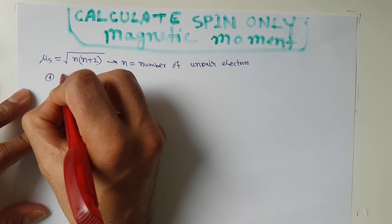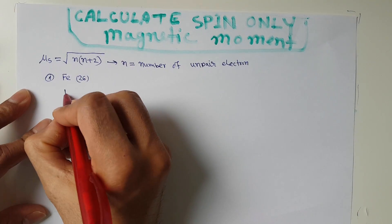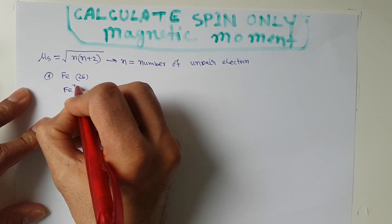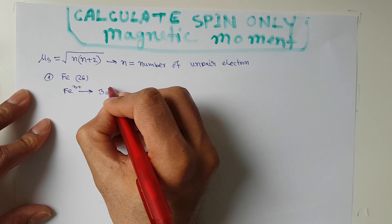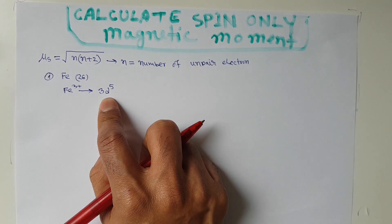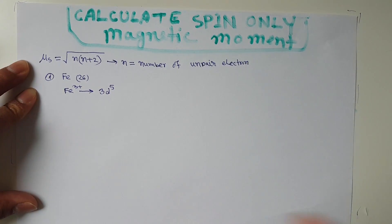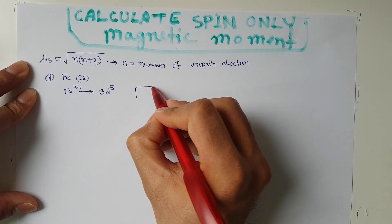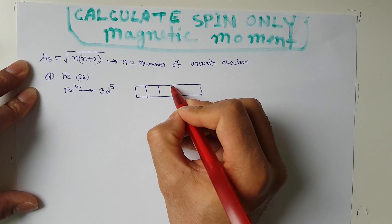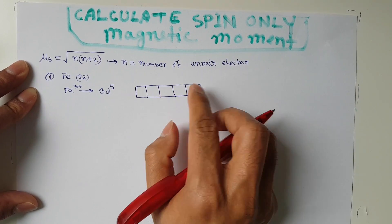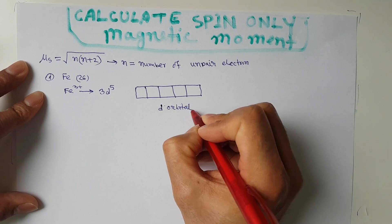For the first example, consider iron. Fe has 26 electrons. Let's consider the Fe³⁺ ion. The Fe³⁺ ion has the outermost orbital configuration 3d⁵, meaning the outermost orbital is occupied by five electrons. The question is: how many unpaired electrons does it have? The d-orbital is divided into five subshells.